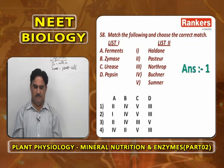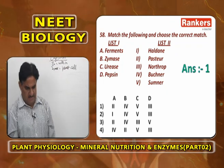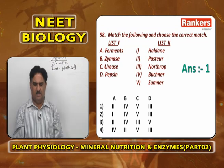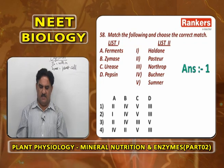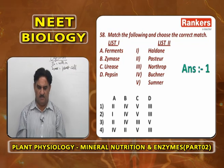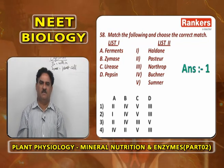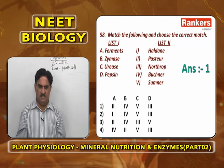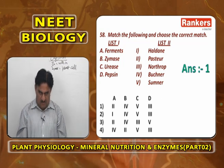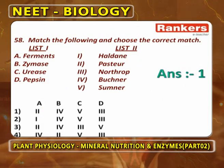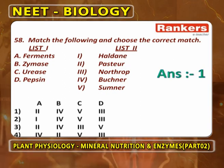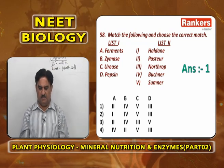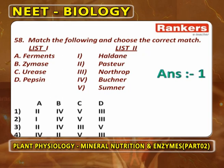Louis Pasteur discovered ferments. Buchner coined the term Zymase. J.B. Sumner crystallized urease from Jack bean plants. Pepsin and trypsin were studied by Northrop, who proved the protein nature of enzymes. So the matching is: Ferments–Pasteur (A2), Zymase–Buchner (B4), Urease–Sumner (C5), Pepsin–Northrop (D3). Answer is option 1.